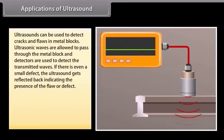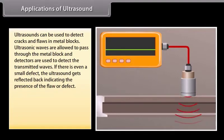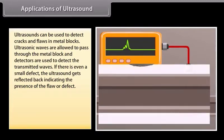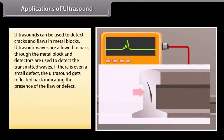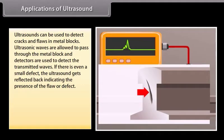Ultrasounds can be used to detect cracks and flaws in metal blocks. Ultrasonic waves are allowed to pass through the metal block and detectors are used to detect the transmitted waves. If there is even a small defect, the ultrasound gets reflected back indicating the presence of the flaw or defect.